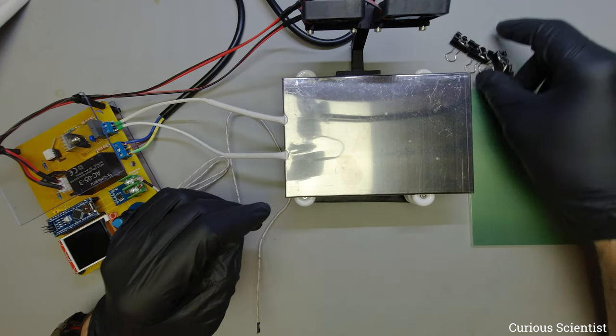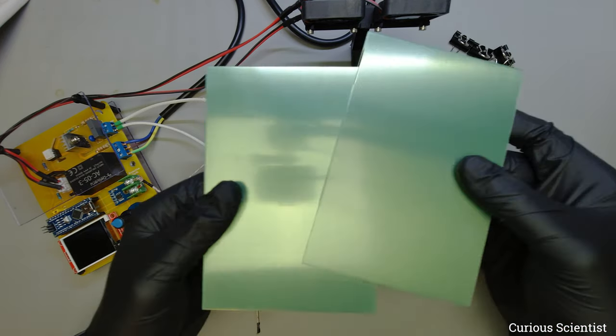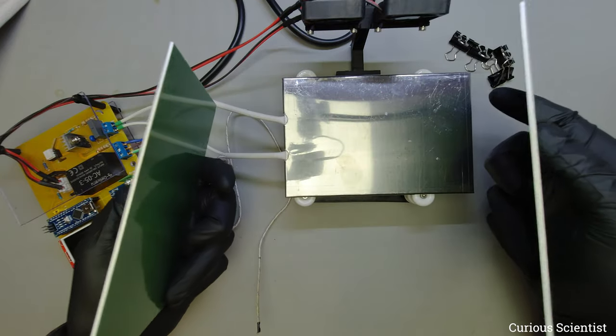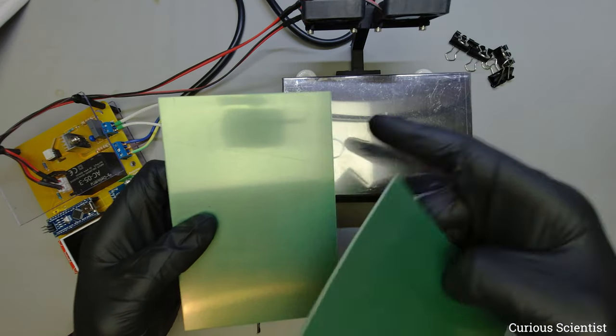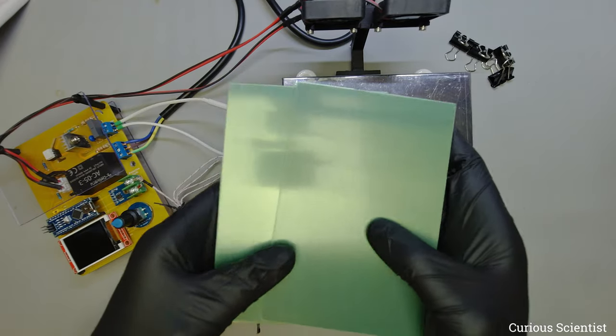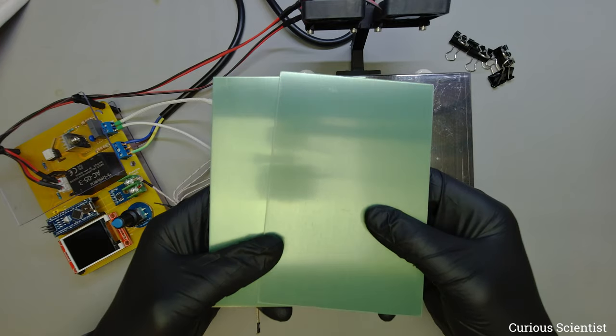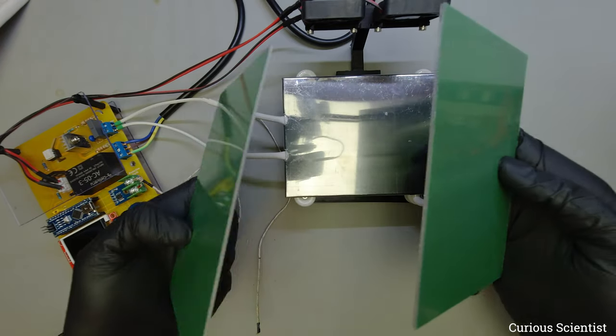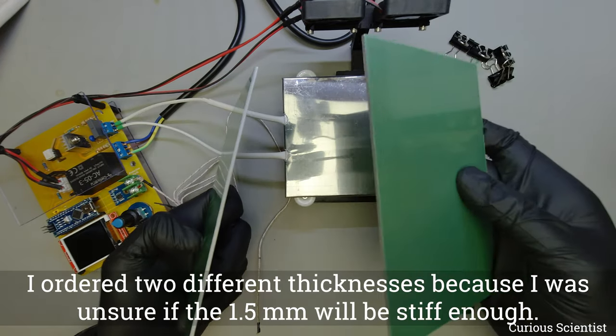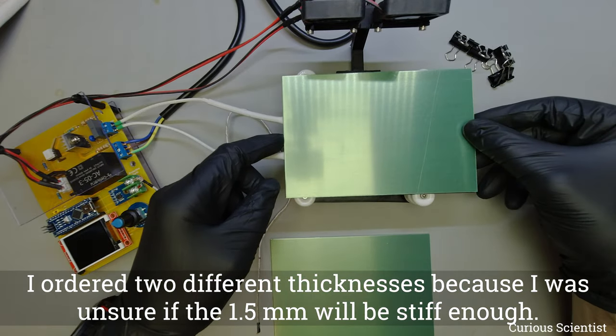So then I came up with the idea which will be these sheets here. These are just aluminum sheets, they still have the protective foil on because I want to peel it in front of you. These are 1.5 millimeter and 2 millimeter thick plates, the same dimensions as this thing.